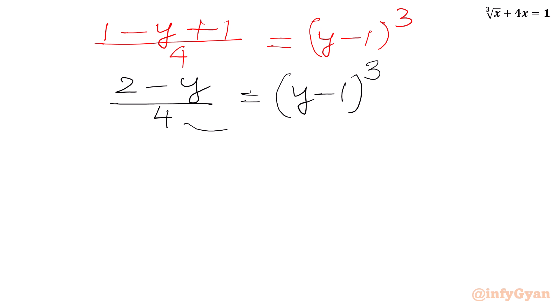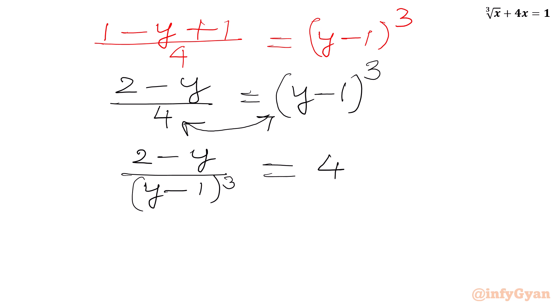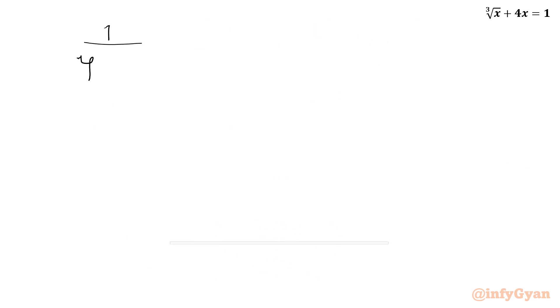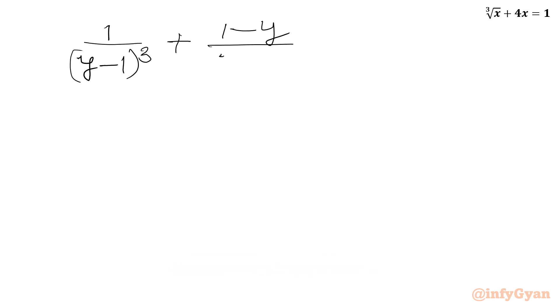Now I will switch these two values, so I can write (2 minus y) over (y minus 1) whole cube equal to 4, since y cannot be 1. Now I will split 2 minus y as 1 plus 1 minus y over (y minus 1) whole cube equal to 4. Splitting the numerator with the denominator: 1 over (y minus 1) whole cube plus (1 minus y) over (y minus 1) whole cube equal to 4.